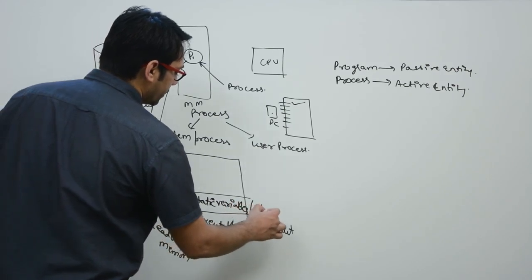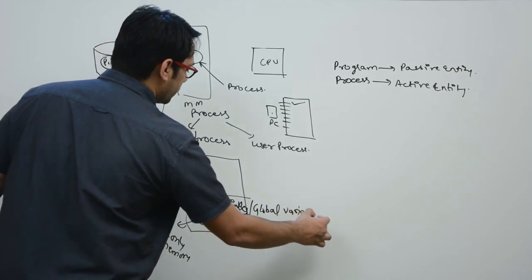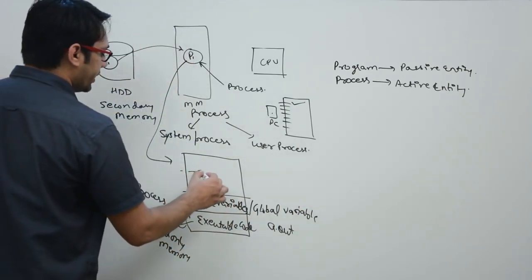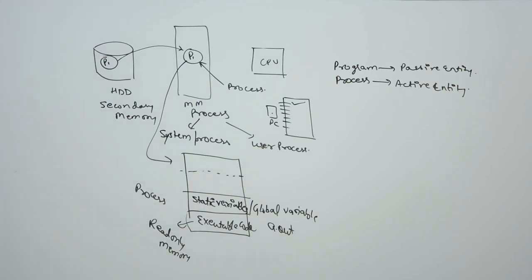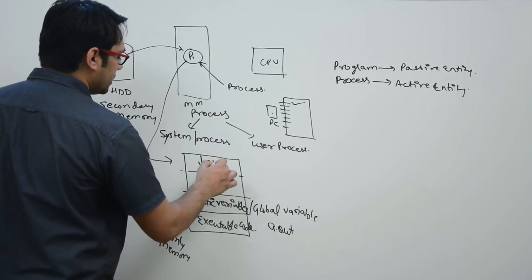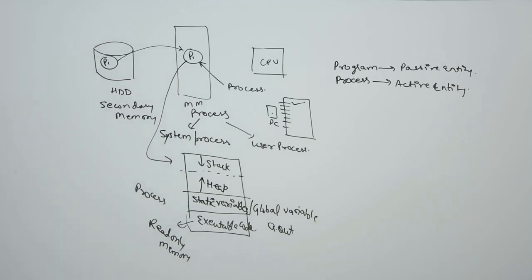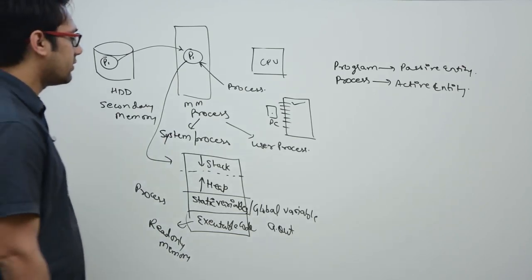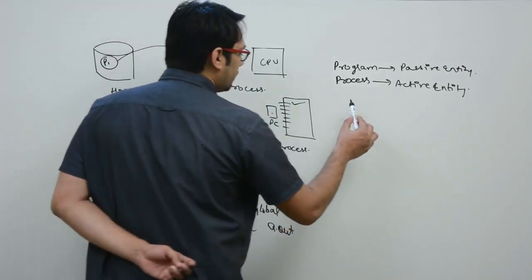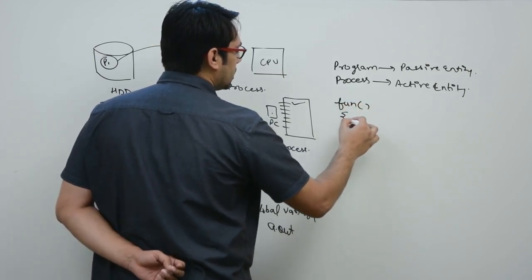The second area of process memory is for static variables and global variables. The remaining memory area is divided into two parts — heap and stack. Let's discuss the difference between static variables and global variables with an example.